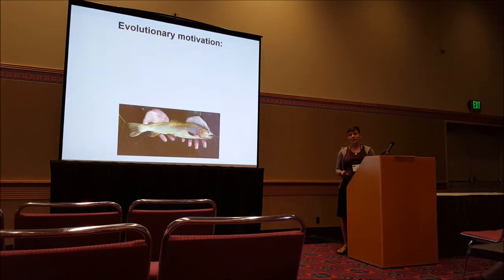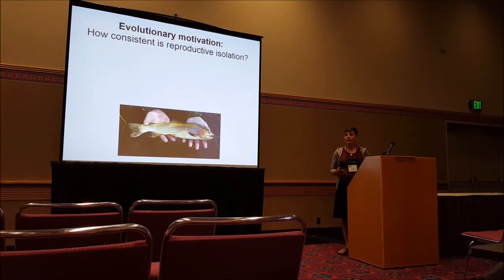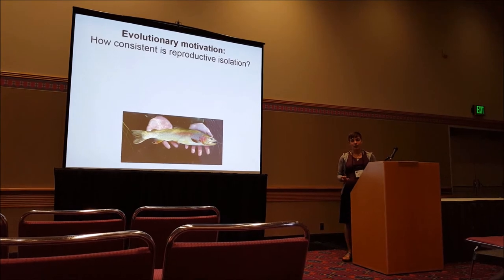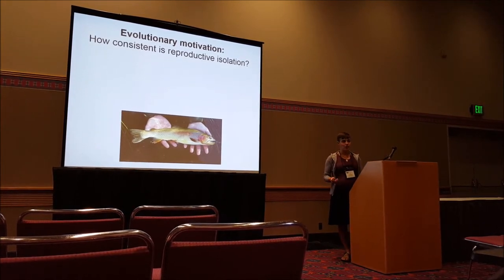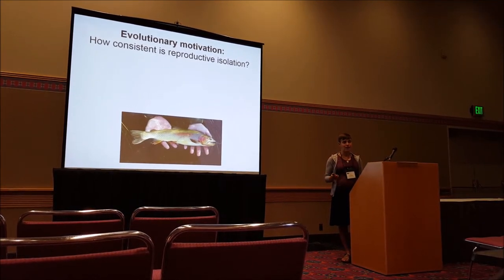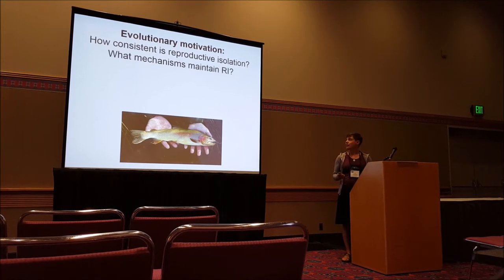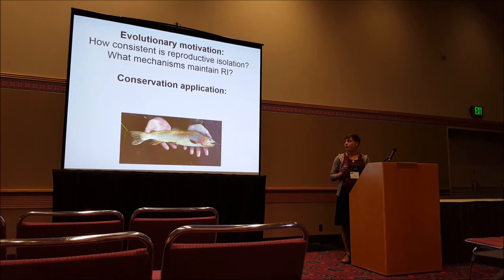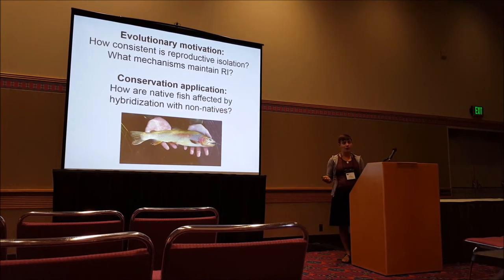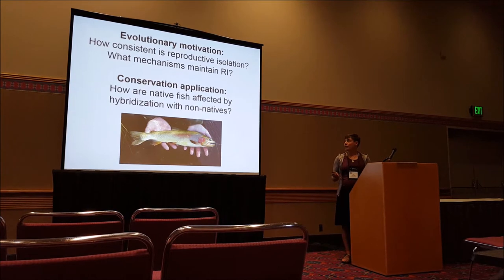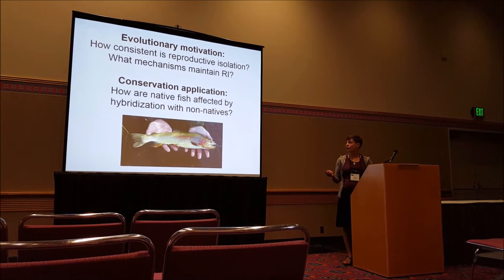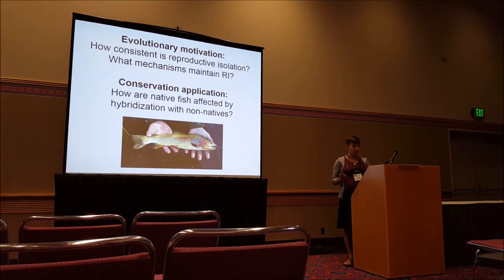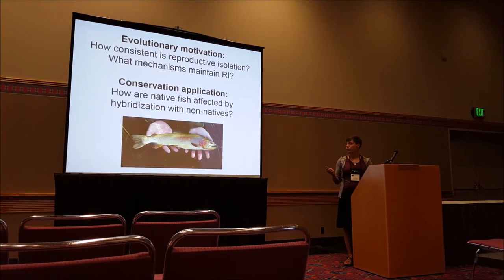We have a couple of reasons that we're interested in doing this work. The first is that we'd really like to know, across the range where a pair of species interacts, how consistent reproductive isolation is, and what mechanisms maintain reproductive isolation. For this particular project, there's also a distinct conservation application: we'd really like to know how native fish — in this case the yellowstone cutthroat trout — are affected by hybridization with non-native fish, in this case rainbow trout.